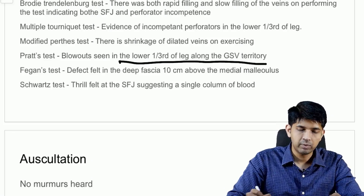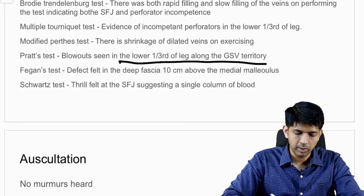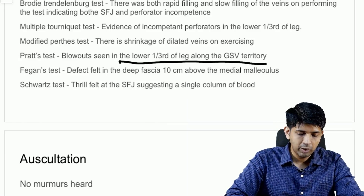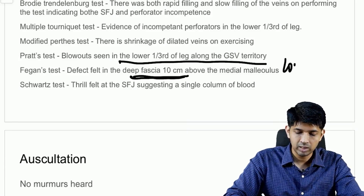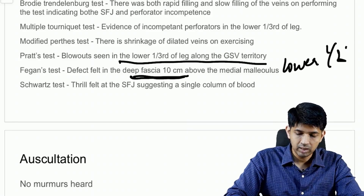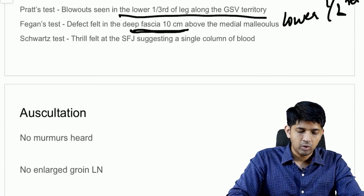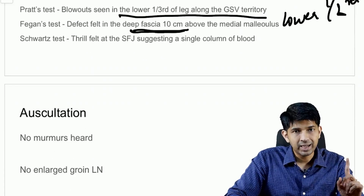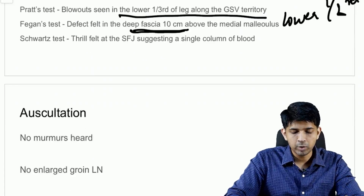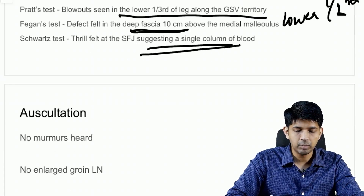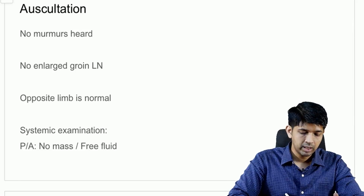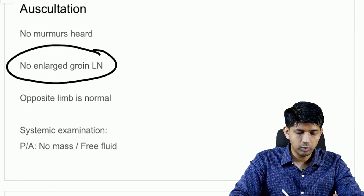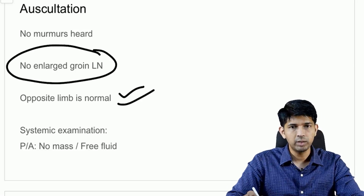On Pratt's test, blowout was again seen in the lower one-third of the leg along the GSV territory, confirming perforators in the lower one-third. On Fegan's test, a defect was felt in the deep fascia 10 centimeters above the medial malleolus — still the lower one-third. On the Schwartz test, a thrill was felt at the saphenofemoral junction, suggesting a single column of blood. On auscultation, there were no murmurs heard.